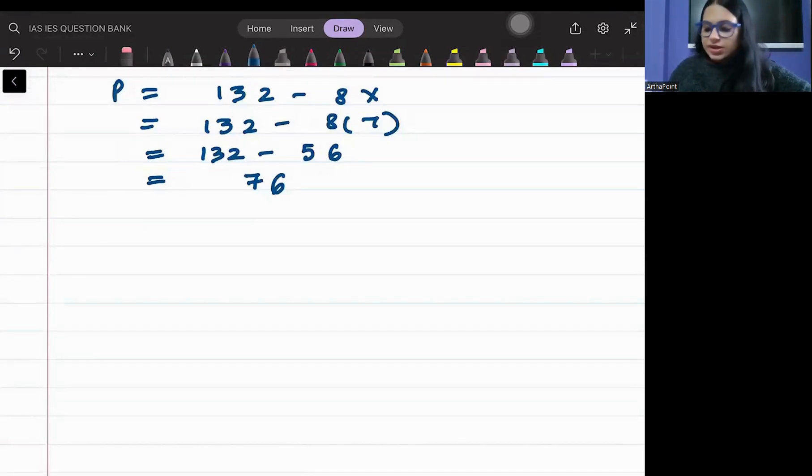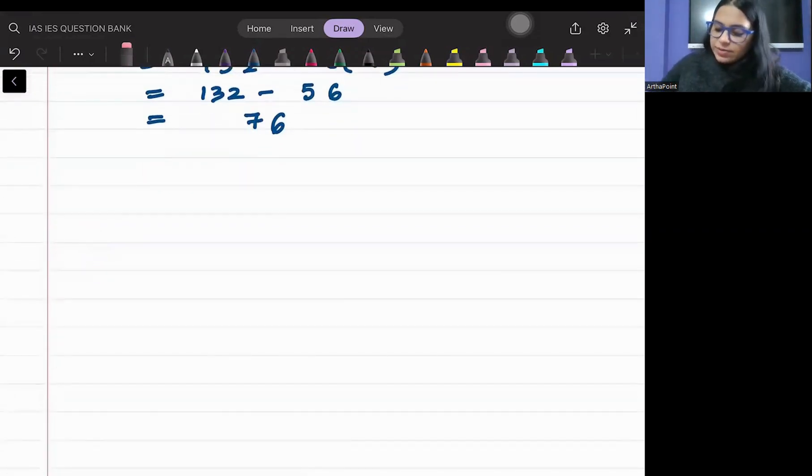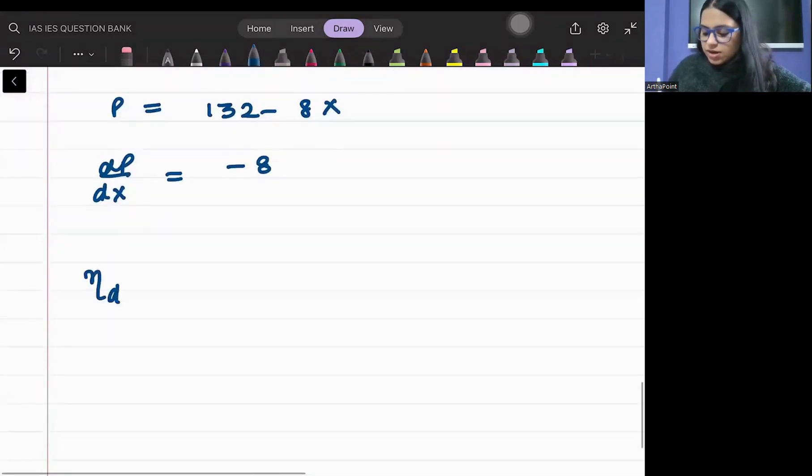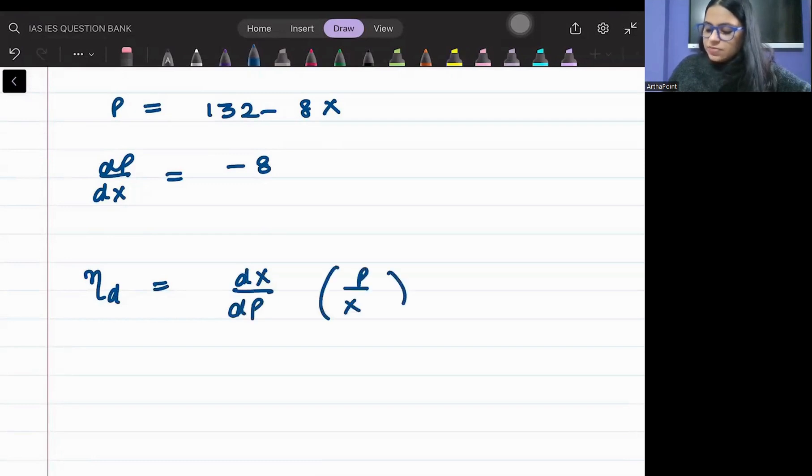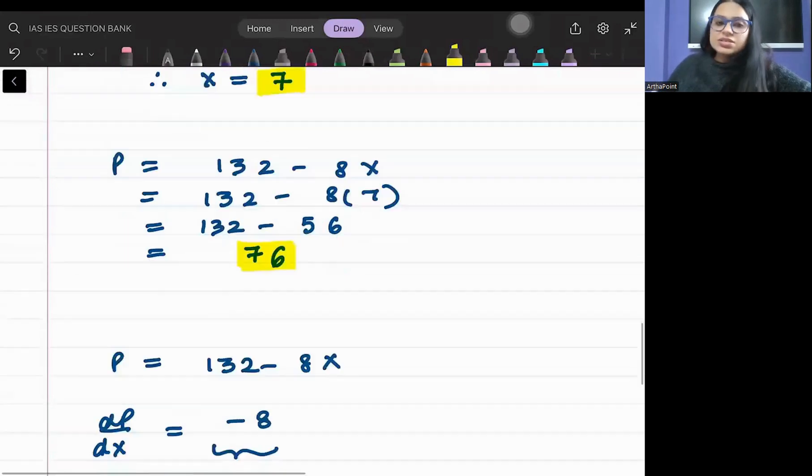Now I need to show that he will work in the elastic region. Very simple. So if I just go back to my price curve or price equation, I was given 132 minus 8X. So what will be dP by dX? It will be minus 8. What is elasticity of demand? It is dX by dP into P by X. So here dX by dP will be minus 1 by 8.